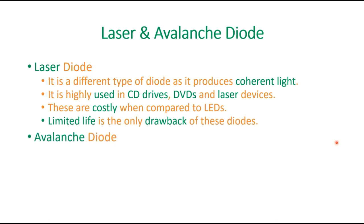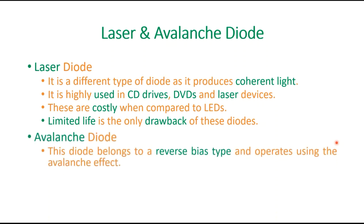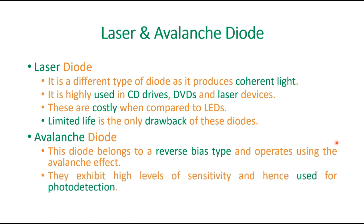Coming to avalanche diode: this kind of diode belongs to the reverse bias type and it operates using the avalanche effect. They exhibit high levels of sensitivity and are hence used for photo detection applications.